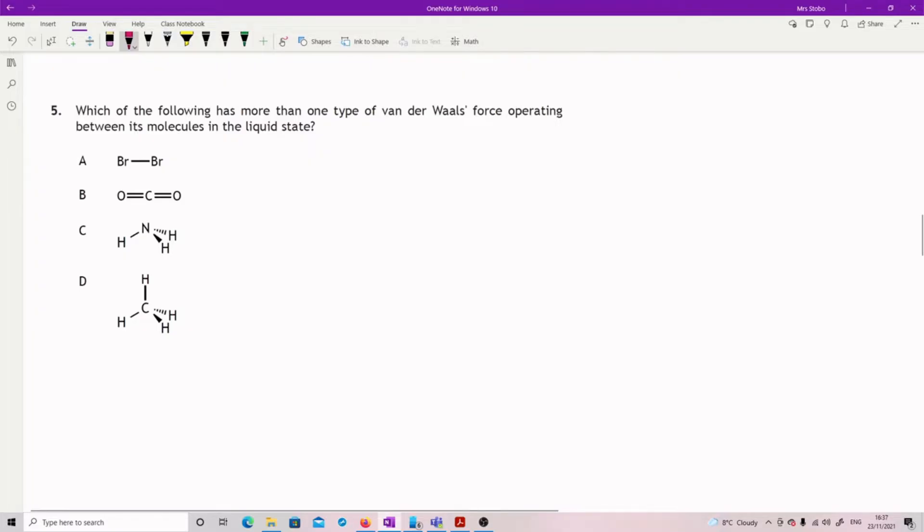Question five: which of the following has more than one type of van der Waals force operating between its molecules in the liquid state? This is reasonably tricky. What we're looking for is: have we got LDFs, which you have everywhere? Have we got dipole-dipole? Or have we got hydrogen bonds?